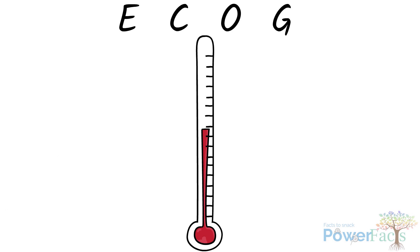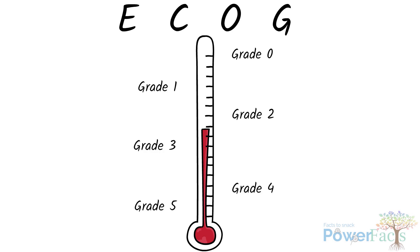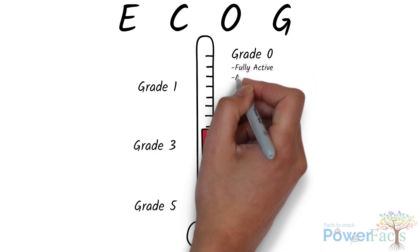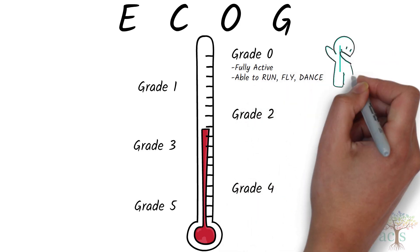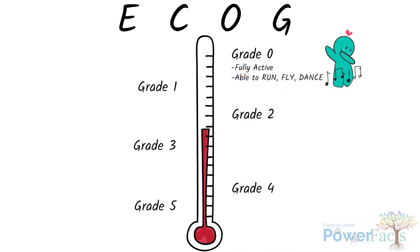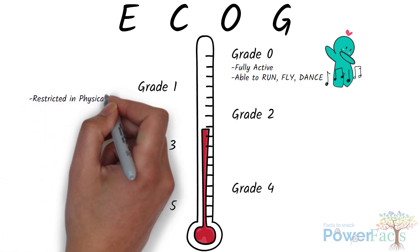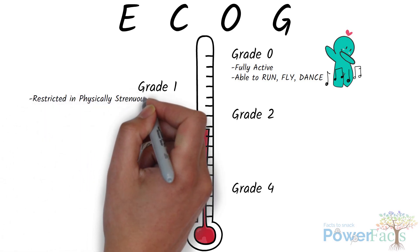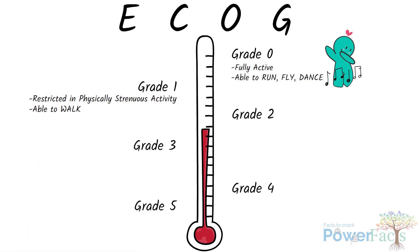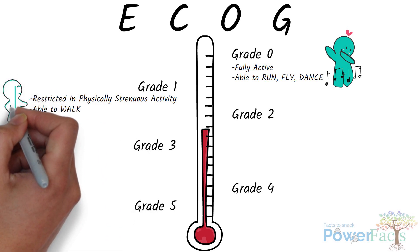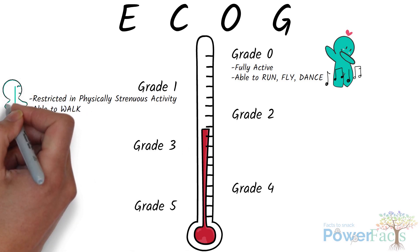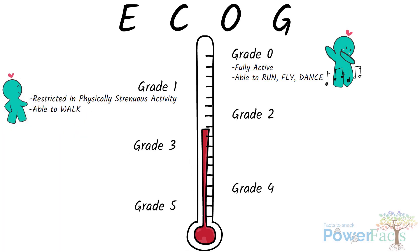ECOG is categorized from grade 0 to grade 5. Grade 0 is when the patient is fully active and can run, fly, dance — you get what I mean. Grade 1 is when the patient is restricted in physically strenuous activity but is still able to walk and carry out light duties, similar to how you feel when you're having a fever — you can still get some water for yourself but you probably can't go for a jog.